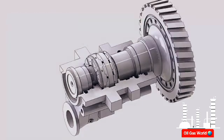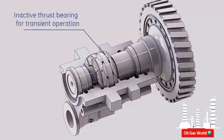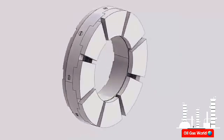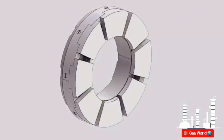While in transient operation during startup and shutdown, the shaft tends to move in the downstream direction, where the inactive or unloaded thrust bearing is located. The active thrust bearing is a tilting pad equalizing type bearing. An equalizing type bearing is capable of sustaining high axial loads and is tolerant of shaft and housing misalignment.